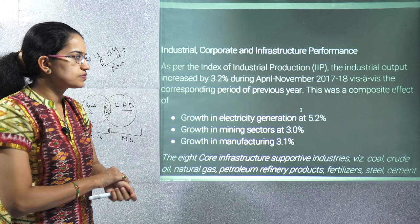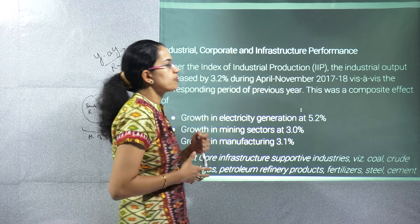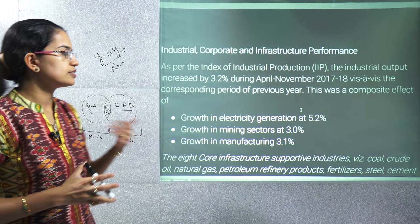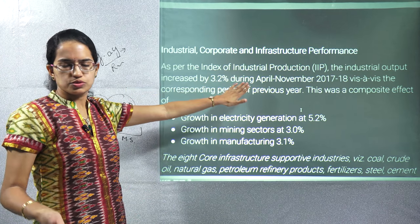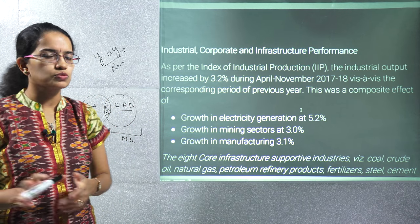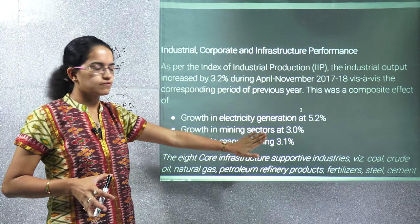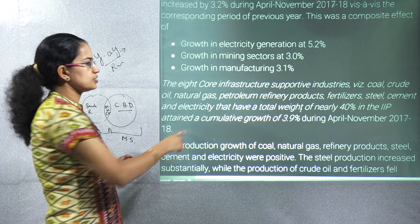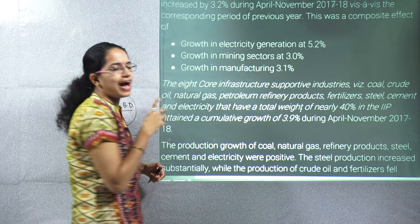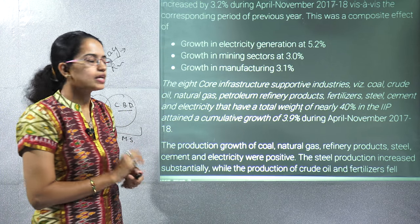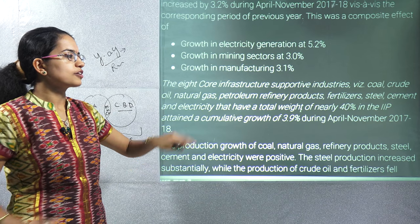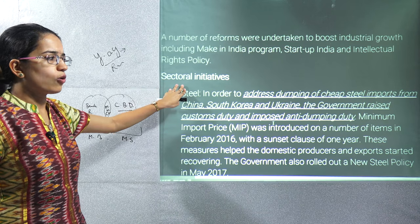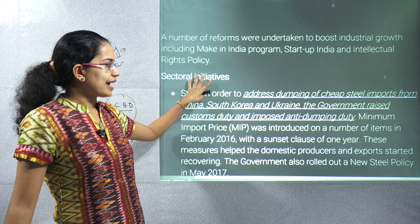The CSO gives the Index of Industrial Production, and its base year has been changed from 2003-04 to 2010-11 to reflect the latest developments. There has been growth in electricity generation at 5.2%, in the mining sector, and in the manufacturing sector. The eight core industries contribute nearly 40% to the IIP, and a cumulative growth of around 4% has been registered.